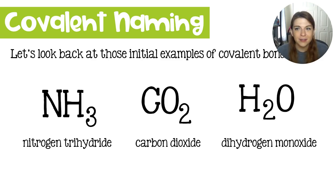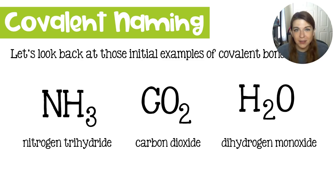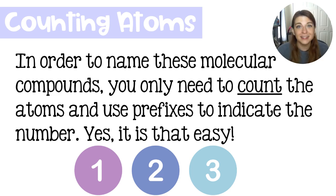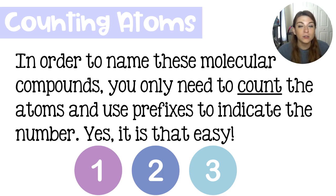Carbon dioxide — we use its IUPAC name all the time. And water is actually called dihydrogen monoxide. Think of how scary that sounds! If you struggled with naming ionic compounds, naming covalent compounds is going to feel like a breath of fresh air, because all you need to do is count. We are going to count the atoms to come up with their specific IUPAC name.